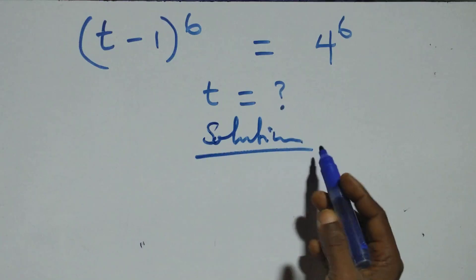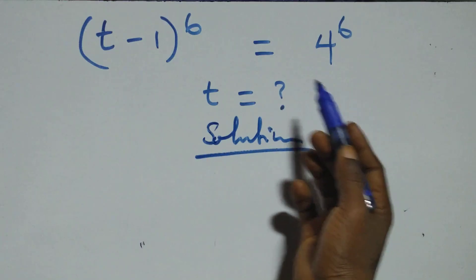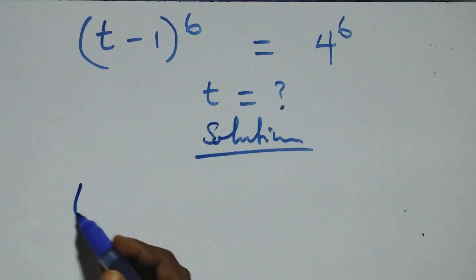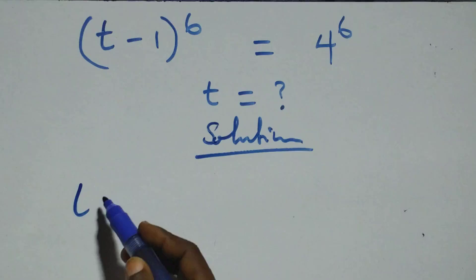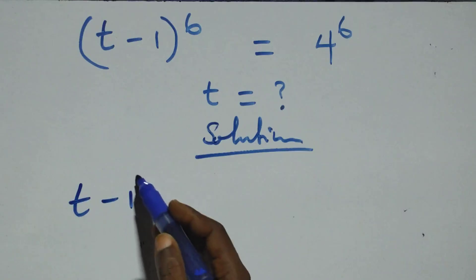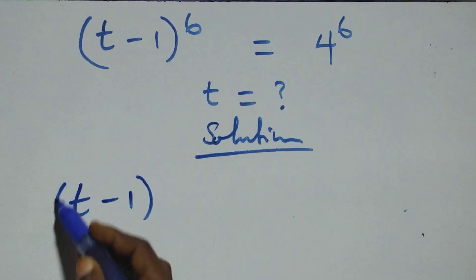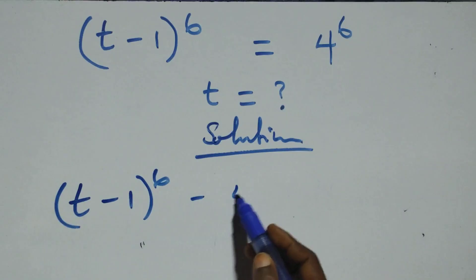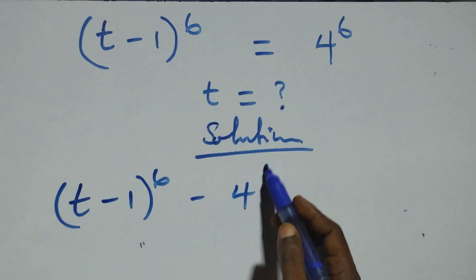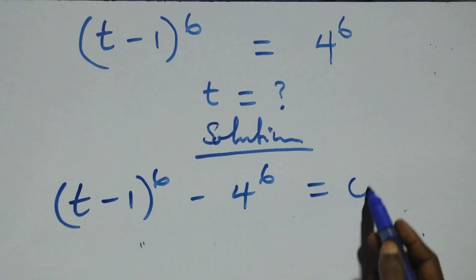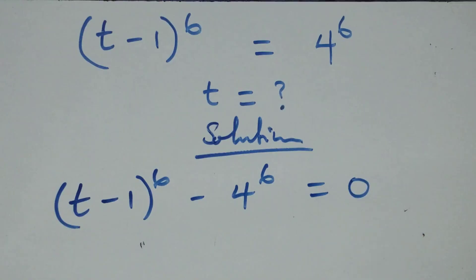From what we have here, we take 4 raised to the power 6 to the left-hand side. We have t raised to the power 1, times 4 raised to the power 6, minus 4 raised to the power 6, equals 0.